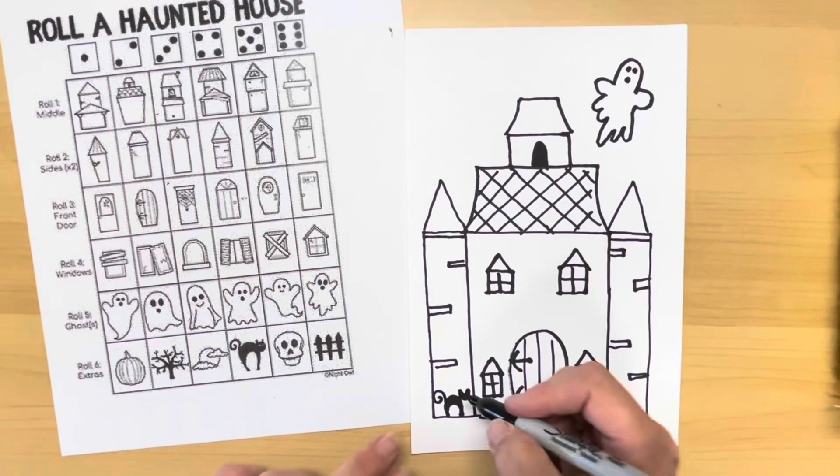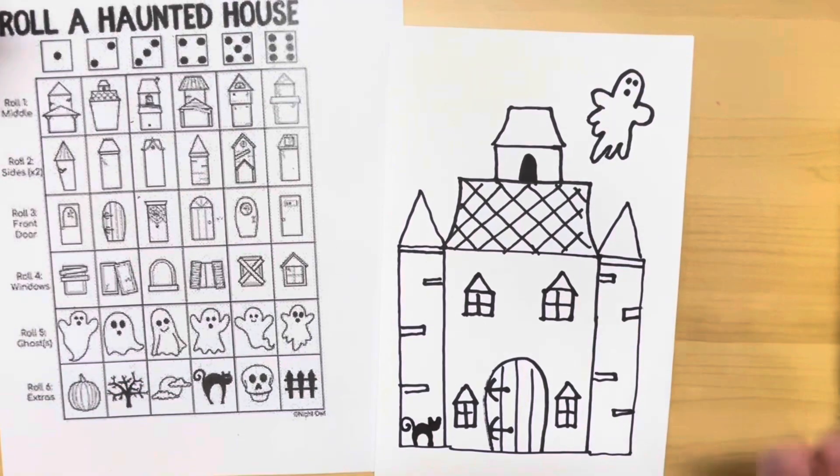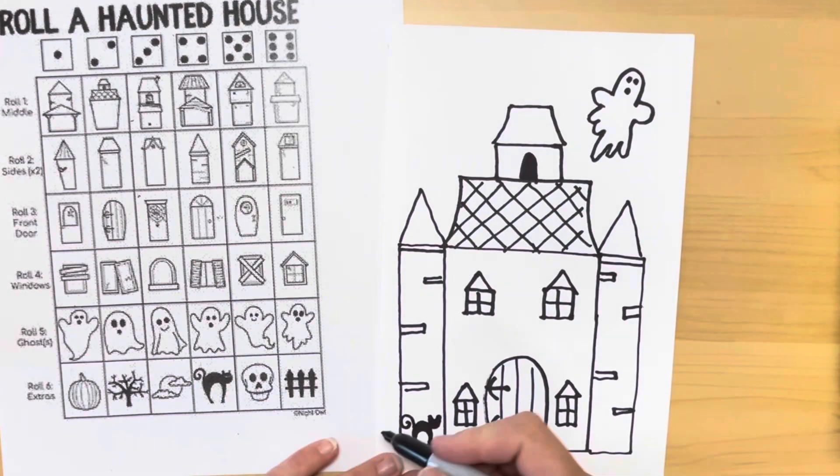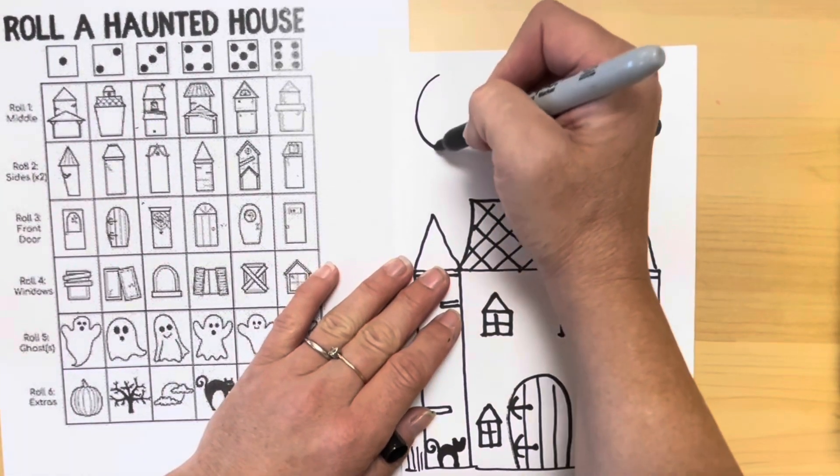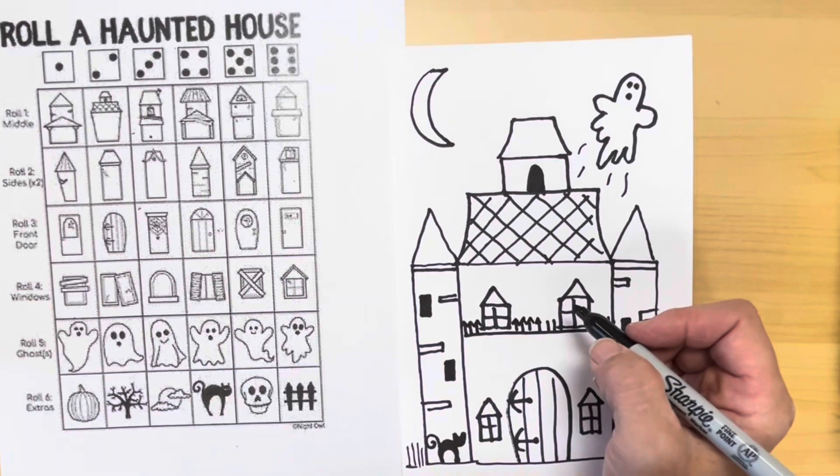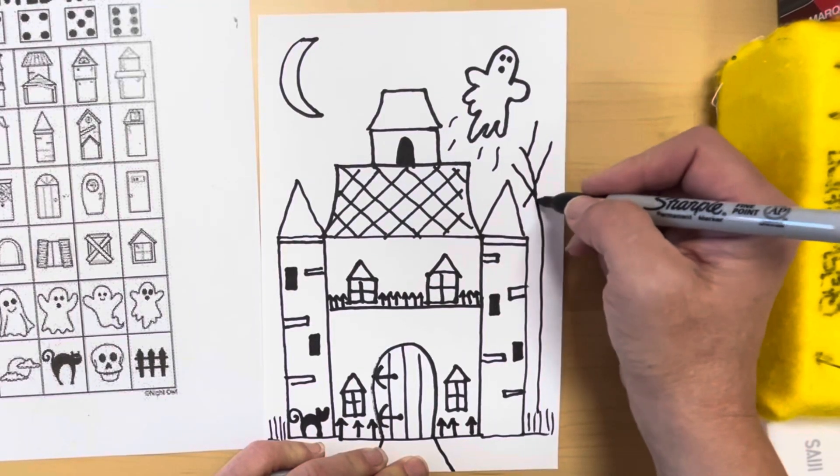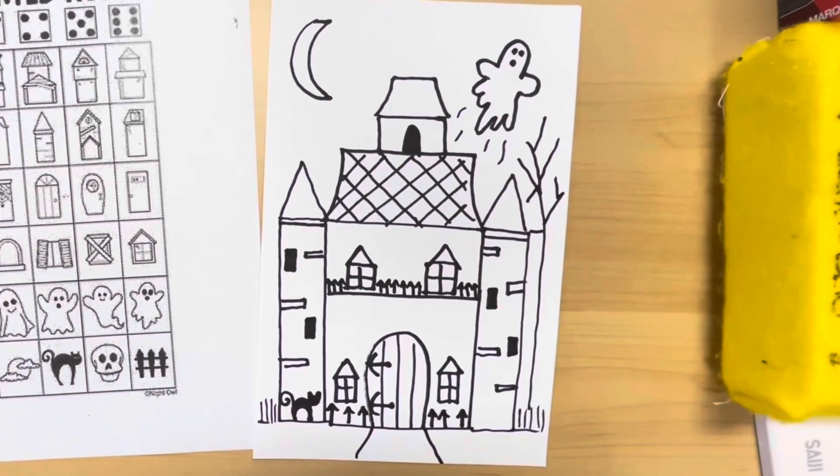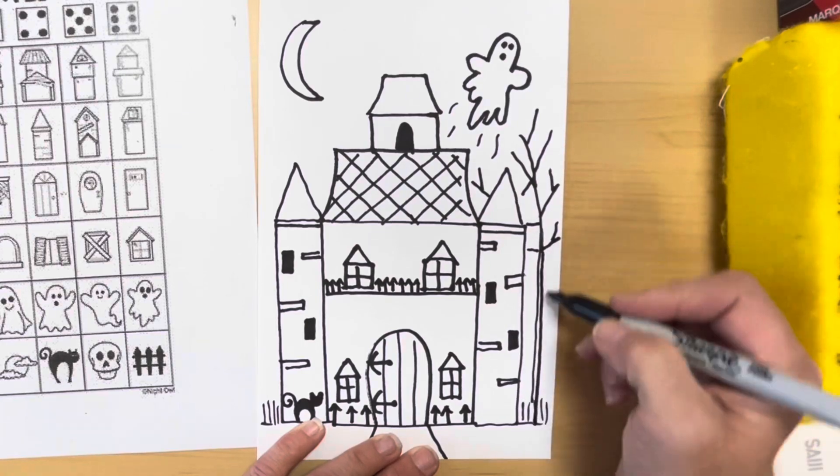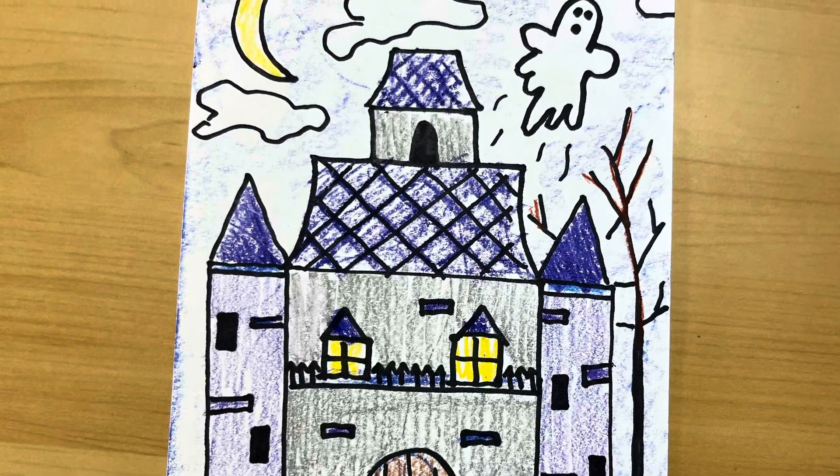After you've finished with all six rolls, you can add some things in on your own that you would like to put in your picture. Make sure everything you add to your haunted house is school appropriate. You know what that means. I want to fill the space up here with a moon. I've got some kind of decorations on the house. And I'll add a few things to the front yard and the side yard. After that, I will neatly color it in crayon. I hope you enjoy making your spooktacular haunted house.